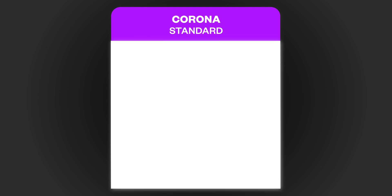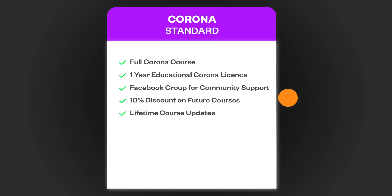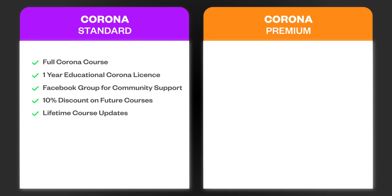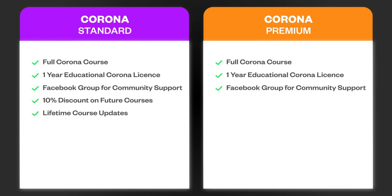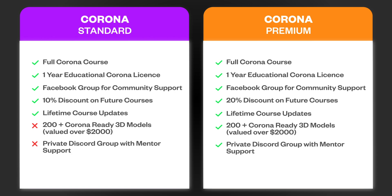The standard package for Corona includes the full Corona course, a one-year renewable educational Corona license, a Facebook group invite for community support, a 10% discount on any future course, and a lifetime membership to the VizCourse platform. The premium package for Corona includes all of the above, plus a 20% discount on future courses, over 200 custom-made Corona 3D models, and a special invite to the private Discord channel.